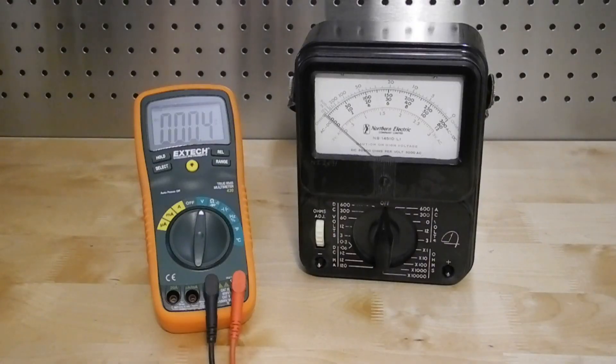There are situations where an analog meter is still useful, such as adjusting a circuit for a peak or a null. In these cases, an analog display is preferred, either using a mechanical meter movement or using a bar graph on a digital display.